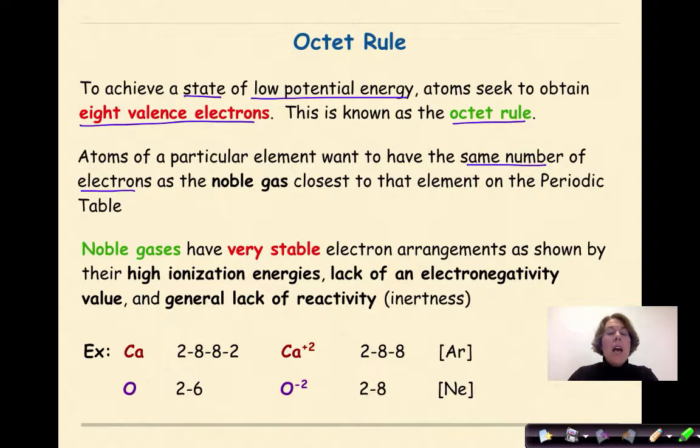Noble gases have very stable electron arrangements, as shown by their high ionization energies, lack of an electronegativity value, which means they're not trying to gain any electrons because they're already stable, and a general lack of reactivity—in other words, inertness.